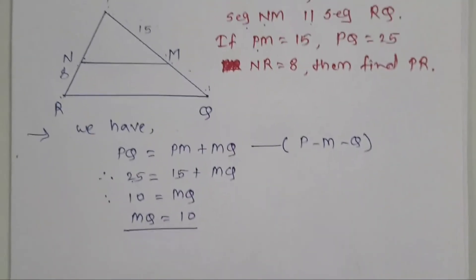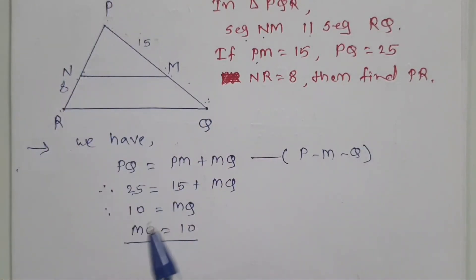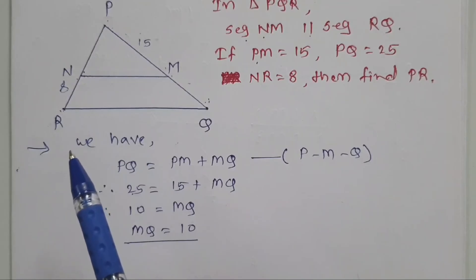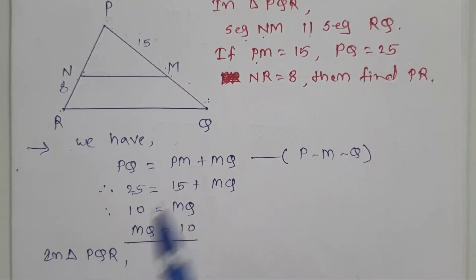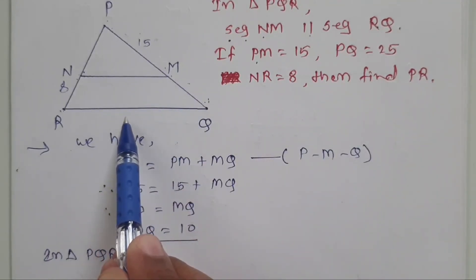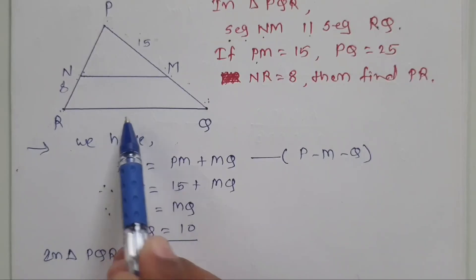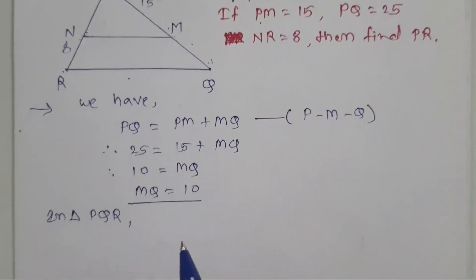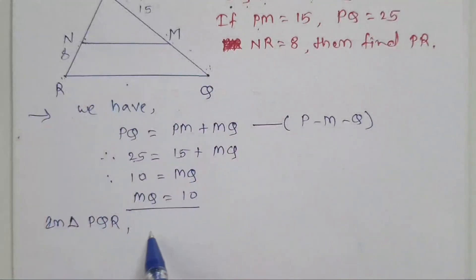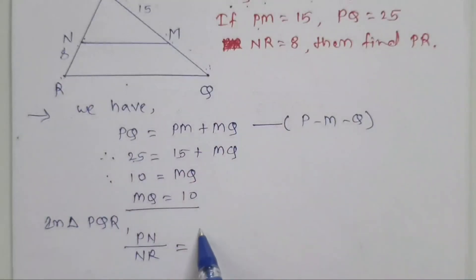Now we can use the Basic Proportionality Theorem for triangle PQR. The theorem states: if in a triangle there is a line parallel to one side, then it divides the remaining two sides in the same proportion. So in triangle PQR, NM is parallel to one side, and by the Basic Proportionality Theorem, line NM intersects the remaining two sides in the same proportion: PN divided by NR is equal to PM divided by MQ.